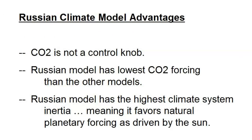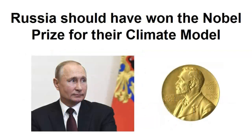A summary of their works: Number one, carbon dioxide is not the main driver of climate change — water vapor is the main heating gas. Number two, the Russian model has the lowest CO2 forcing of all the climate models. Number three, the Russian model has the highest climate system inertia, meaning it favors natural planetary forcing as driven by the sun. Even though the Russian model may have used so-called antithetical science, Russia should have won the Nobel Prize in physics because it is the most accurate of them all. Remember, there is no climate change crisis — just a Nobel Prize Committee decision-making crisis.